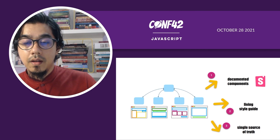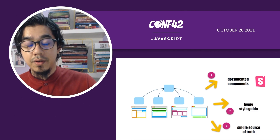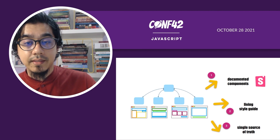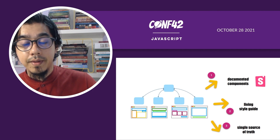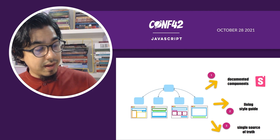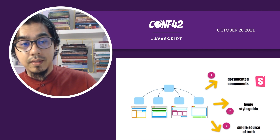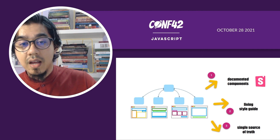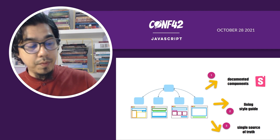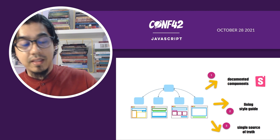A design system provides documentation components published into a living style guide. We usually use tools like Storybook.js, which has options to review how components have been implemented. The living style guide like Storybook also provides a playground for developers to play around with components — for example, if we have a button in the living style guide, the developer will be able to click the button, hover over it, and see the outcome by interacting with the components.